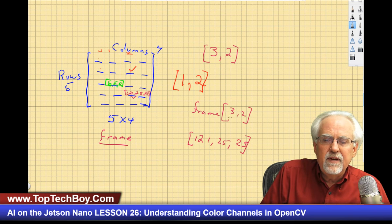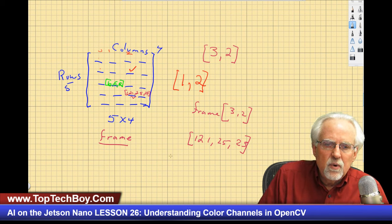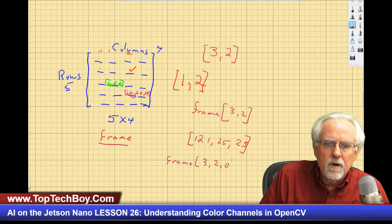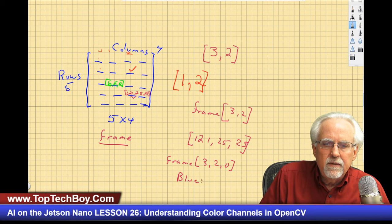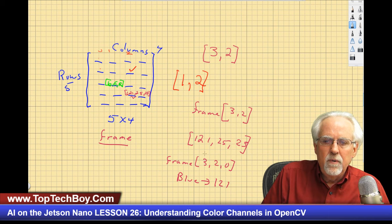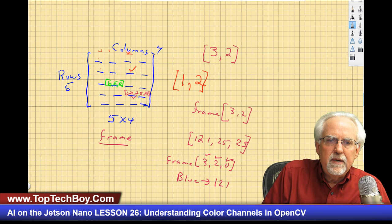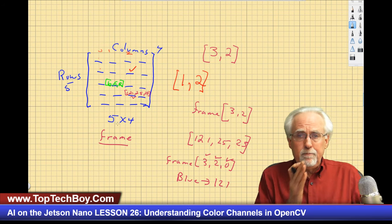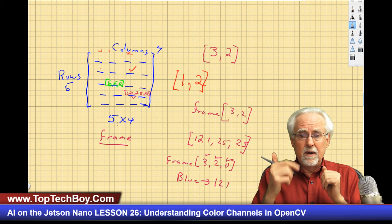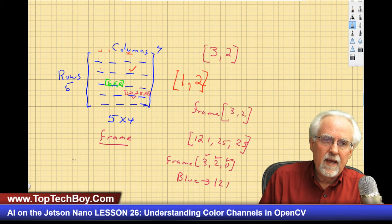You can even index the individual color. If you said frame[3, 2, 0], that would give you the blue channel and return 121. For a grayscale image, you only have one number there. The color order in OpenCV starts with blue, then green, then red — so at each pixel you get blue, green, red.